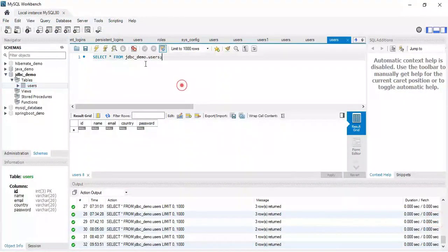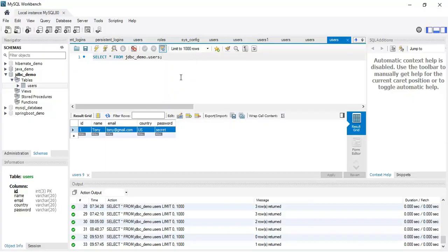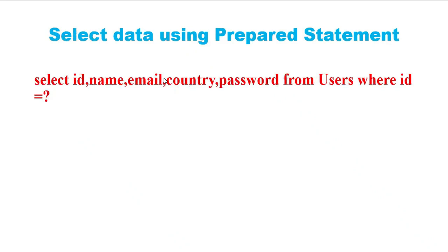Notice here the placeholder values are replaced. This is how you can debug what parameters you are passing to the PreparedStatement. In MySQL Workbench I fired a select query and I can see the record in the users table. This is how we insert a record into a database using JDBC PreparedStatement.